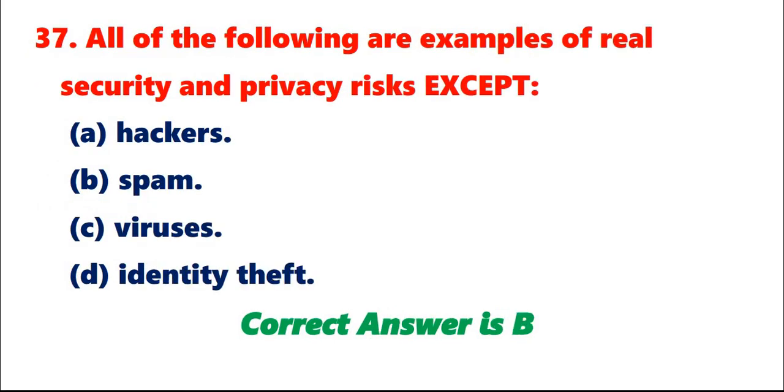Question 37: All of the following are examples of real security and privacy risks except A. Hackers. B. Spam. C. Viruses. D. Identity theft. Correct answer is B.